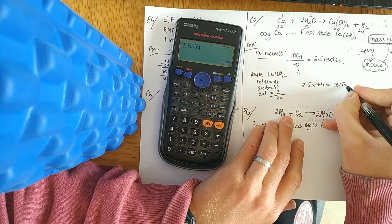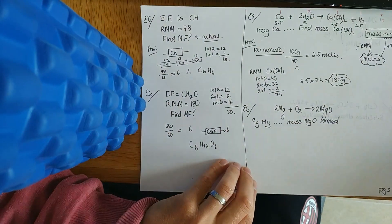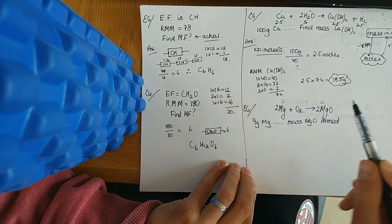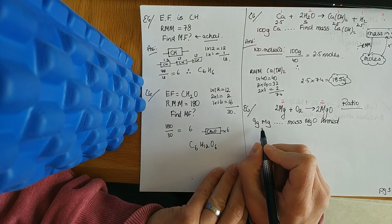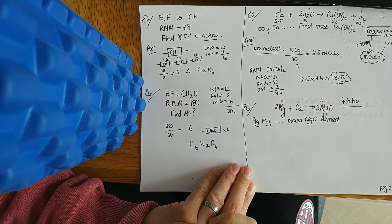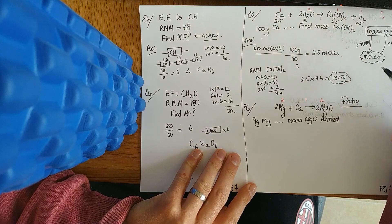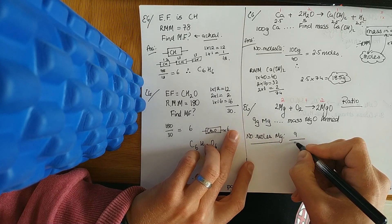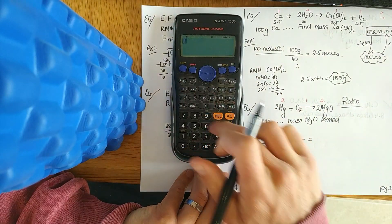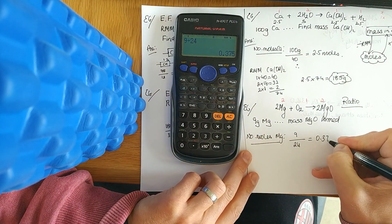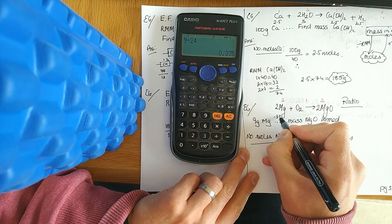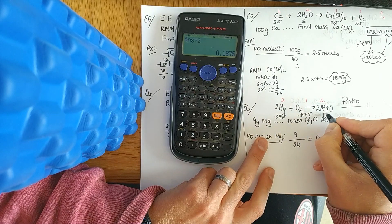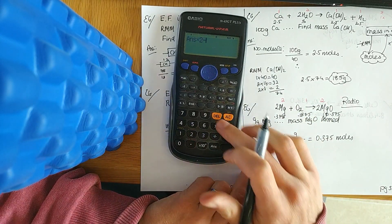That gives 185 grams of calcium hydroxide. Next example: a balanced equation with molar ratio 2 to 1 to 2. They told us 9 grams of magnesium was used — how much magnesium oxide was produced? Go back to moles: 9 divided by relative molecular mass 24 gives 0.375 moles of magnesium. To find moles of oxygen, divide by 2 to get 0.1875. Since the ratio of Mg to MgO is 2 to 2, there are also 0.375 moles of magnesium oxide.